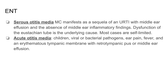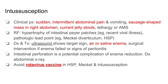If a two-month-old presents with intermittent abdominal pain and vomiting that is sudden in onset, as well as currant jelly stools, think about intussusception. The clinical presentation includes sudden intermittent abdominal pain, vomiting, a sausage-shaped mass in the right abdomen, currant jelly stools, lethargy, and altered mental status.